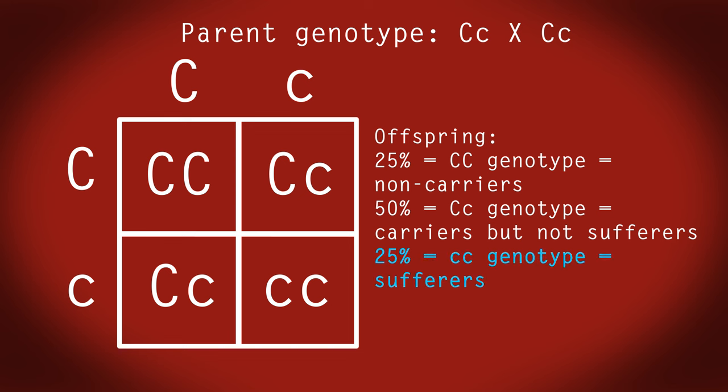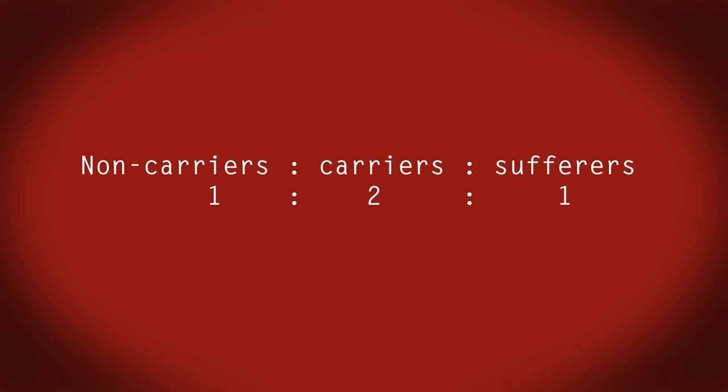So there is a 25% chance that the offspring of two carrier parents will be sufferers of cystic fibrosis. We can represent this in a ratio. See how easy Punnett squares are for showing probability of offspring genotypes?